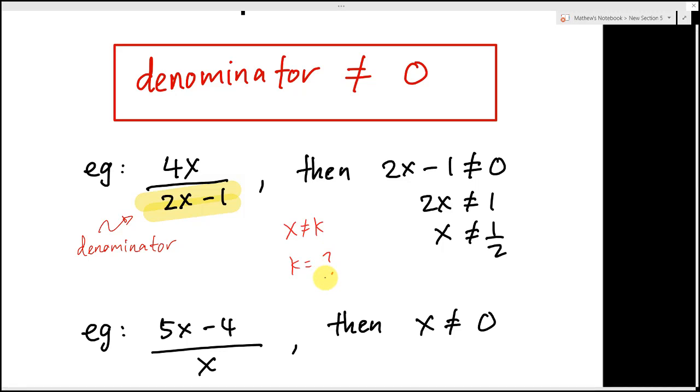Just in case some students do not know, the denominator means the bottom of the fraction. If you have A over B as a fraction, this one we call the denominator. The top we call numerator.